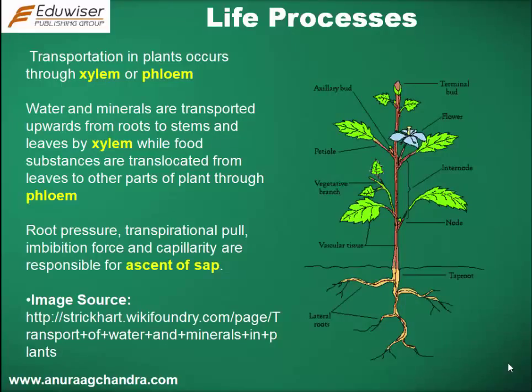Transportation in plants occurs through xylem or phloem. Water and minerals are transported upwards from roots to stems and leaves by xylem, while food substances are translocated from leaves to other parts of the plant through phloem. Root pressure, transpirational pull, imbibition force, and capillarity are responsible for ascent of sap.